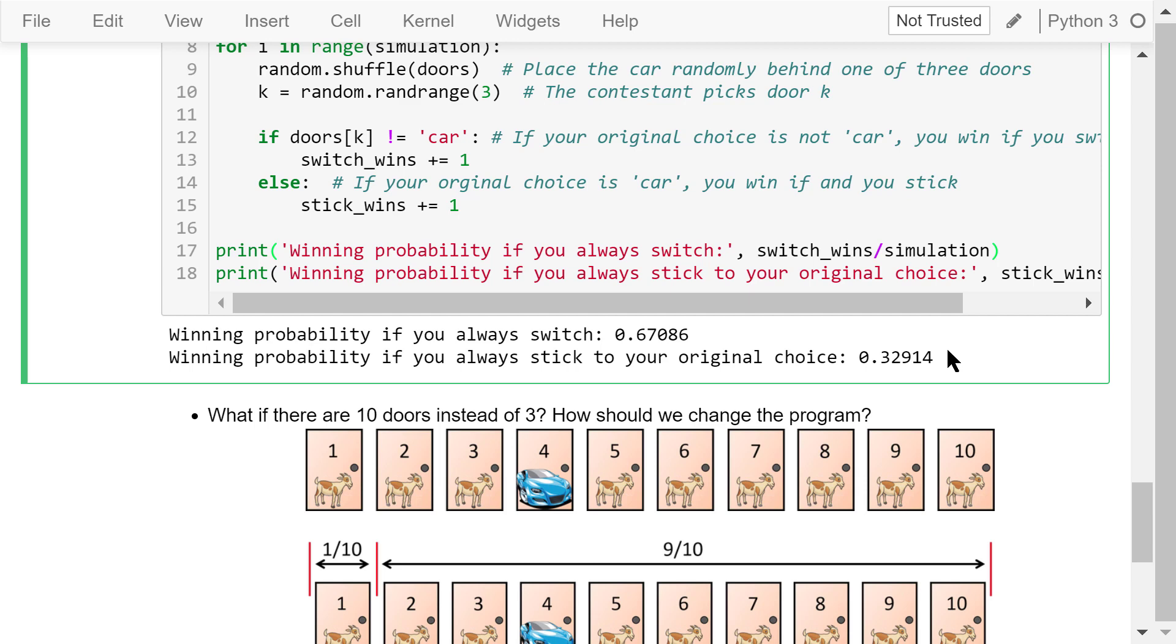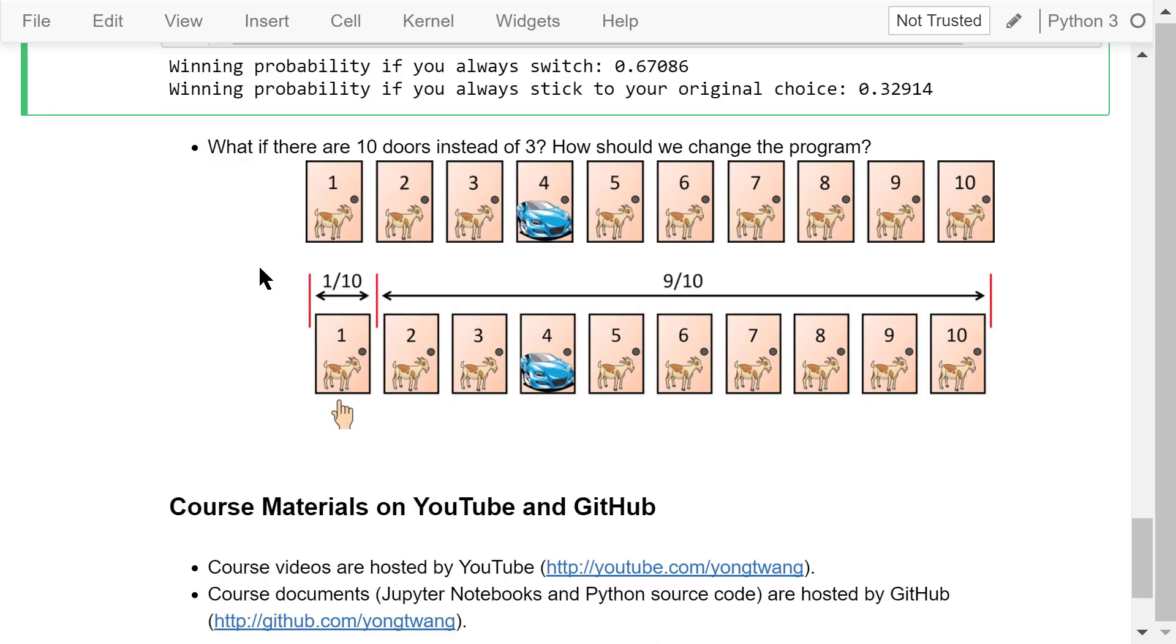In this program, we don't even need to simulate which door the host picks because it doesn't matter. All that matters is the contestant's initial pick, k. What if there are 10 doors instead of 3? How should we change the program? I'll just leave this for you to think about and practice.